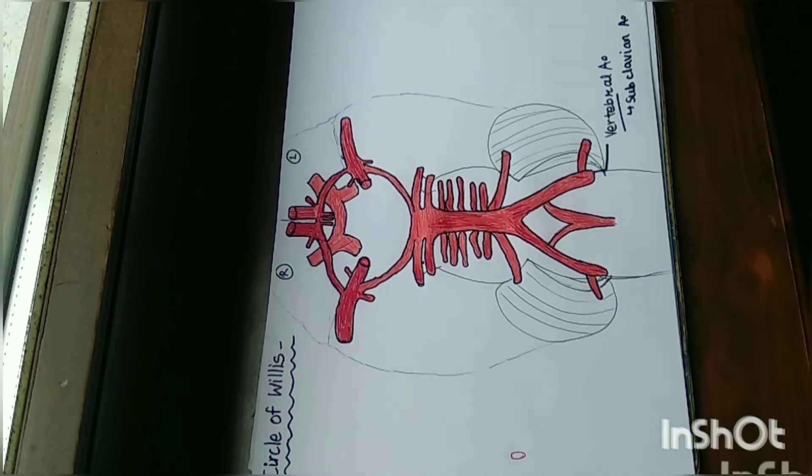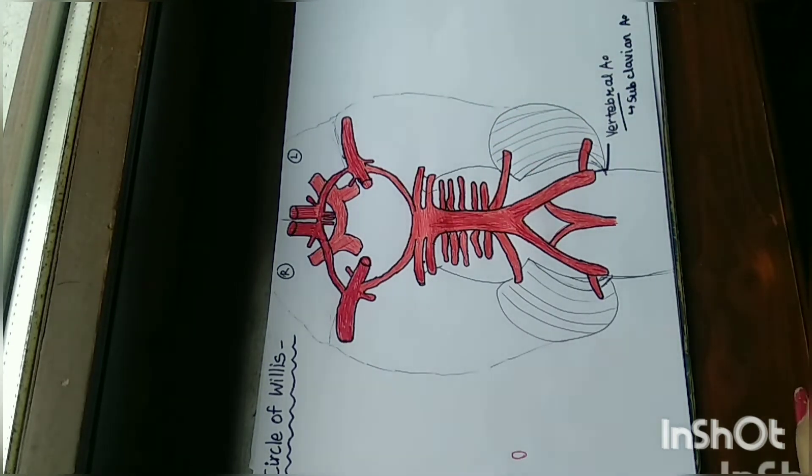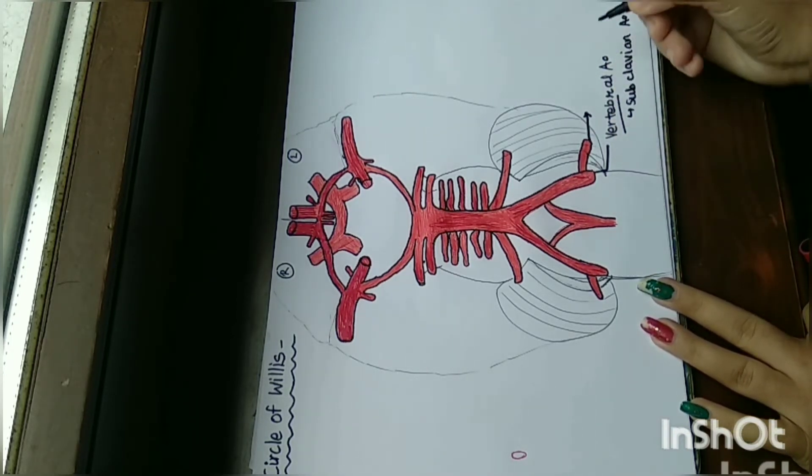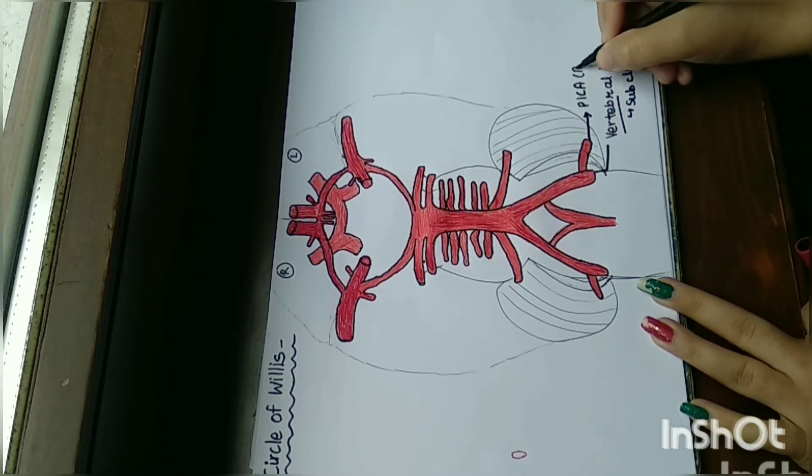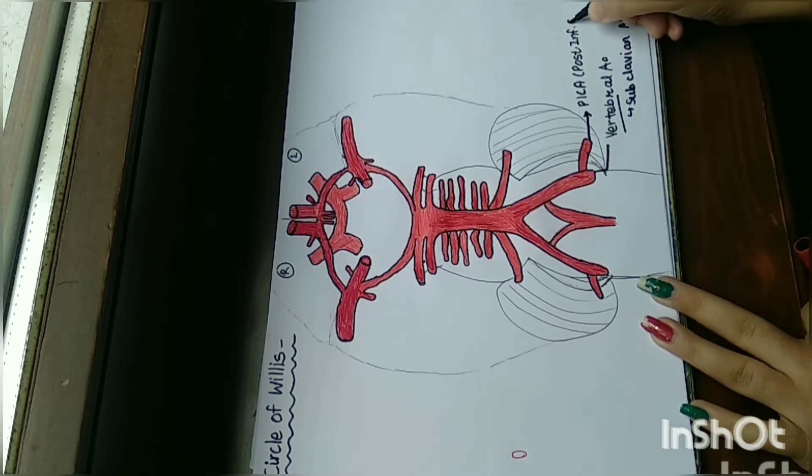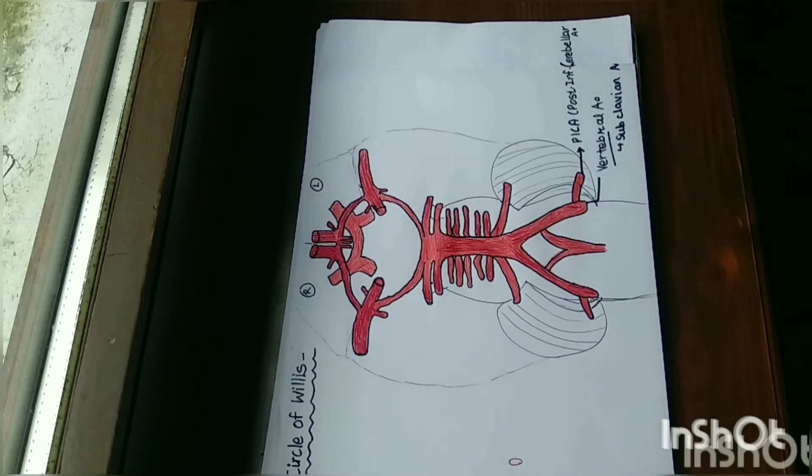The vertebral artery proceeds to the foramen magnum, and before foramen magnum, the vertebral artery goes to the suboccipital triangle. The vertebral artery goes upward and forms PICA, the posterior inferior cerebellar artery. PICA is also an eating disorder in which a person will eat non-nutritive things.